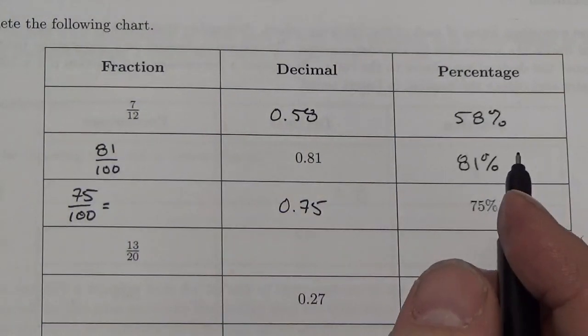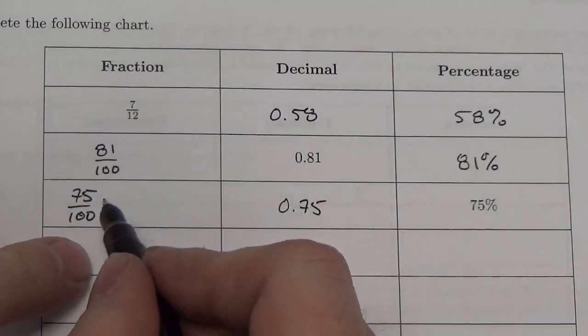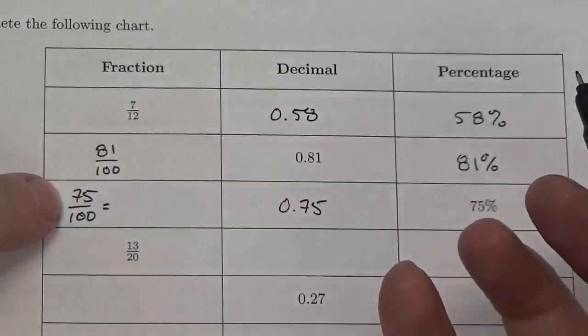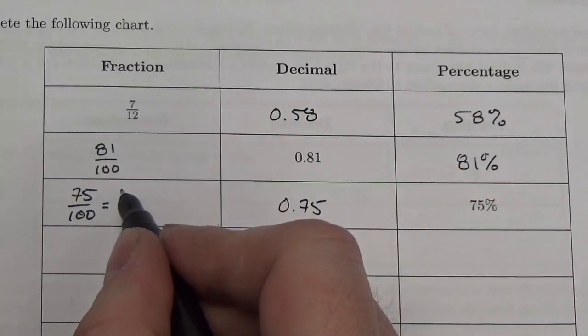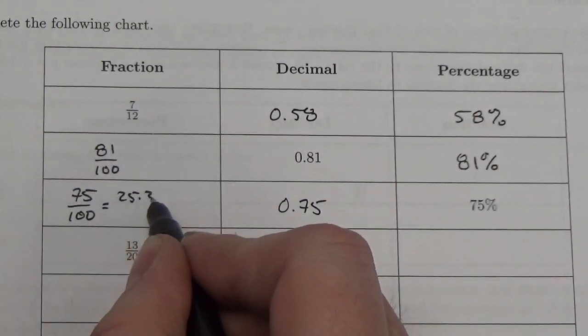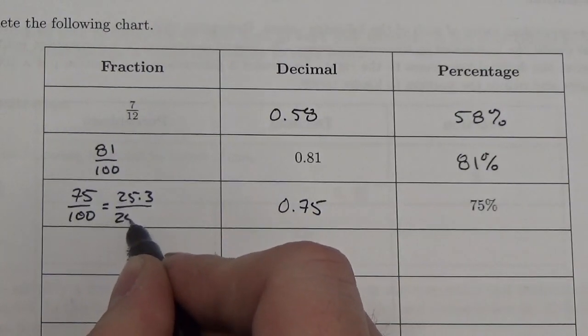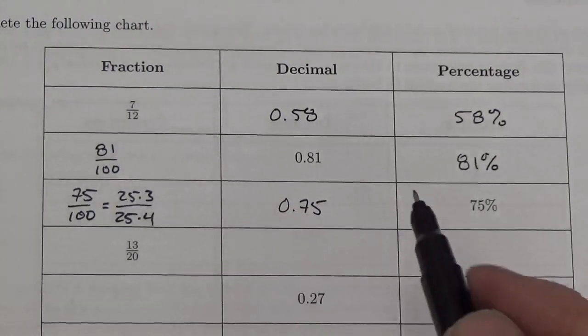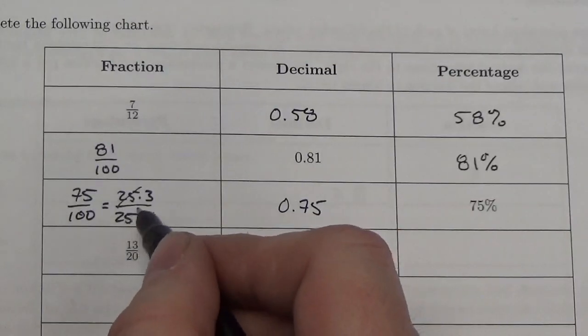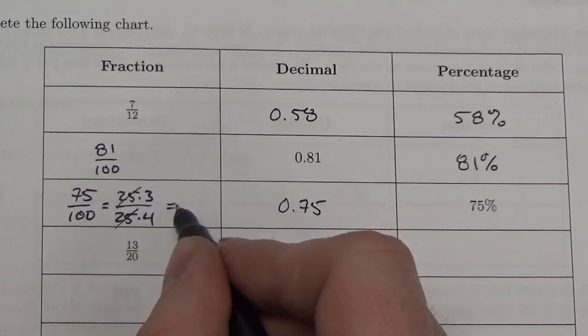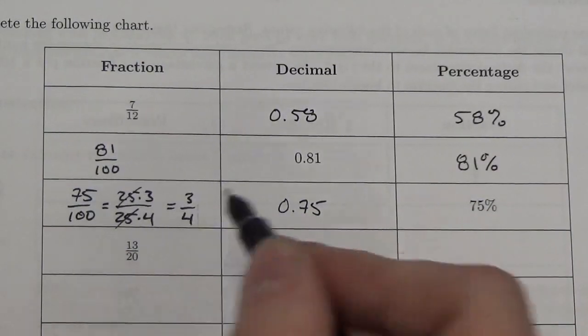Now, in this case right here, I can simplify this. And I can simplify it because I know, and this is mostly because of familiarity with money, really, that 75 is 25 times 3, and 100 is 25 times 4. You know, three-quarters and 75 cents, four-quarters in a loonie. Cancel the 25s, and I'm left with three-quarters.